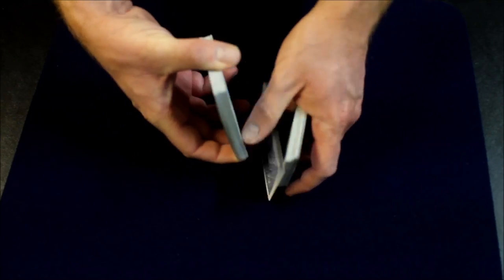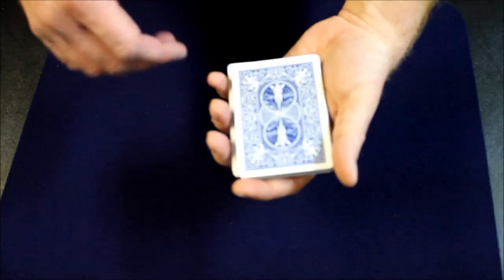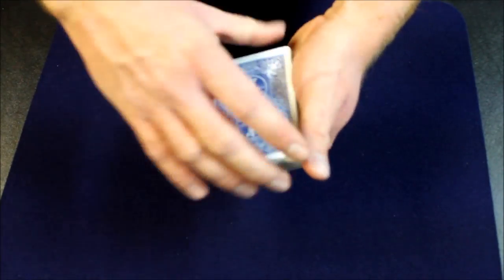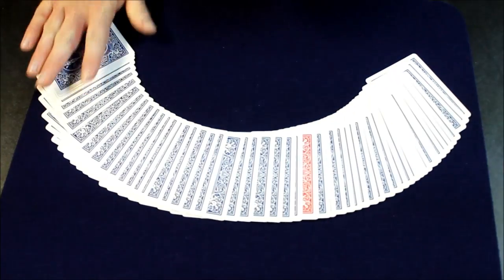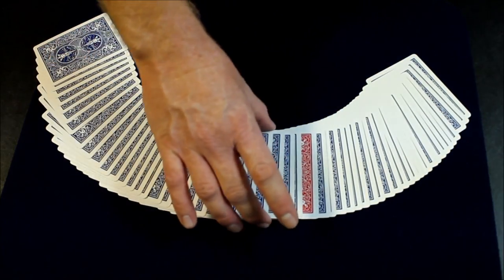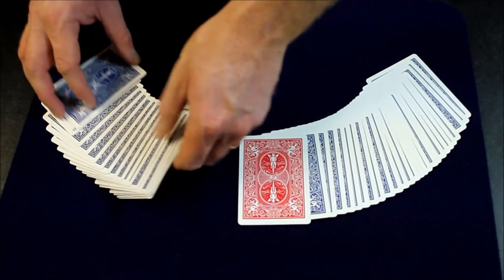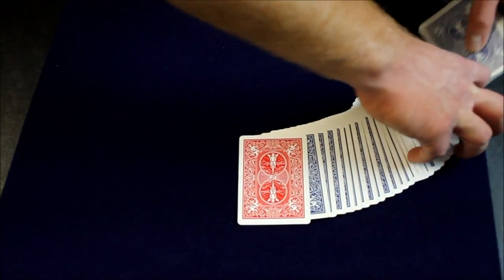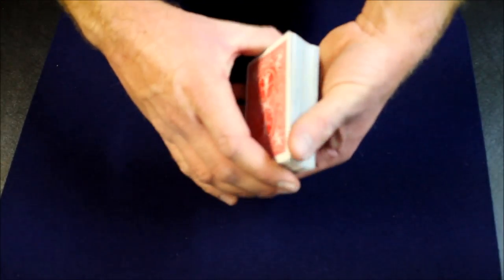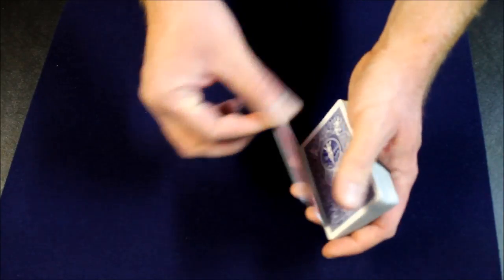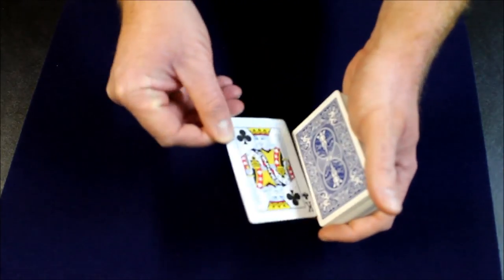So we're gonna take the King of Clubs and we're gonna lose it into the middle of the pack. And with a quick wave and a snap you'll see that all the cards are blue except for we have one red card in the middle of the deck. And you'll see that that red card is in fact their card, the King of Clubs.